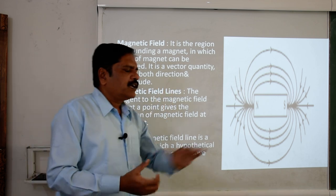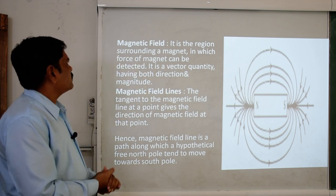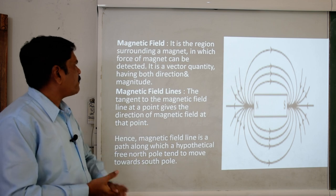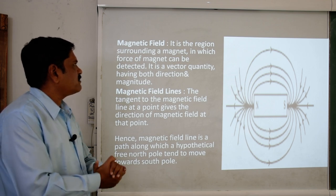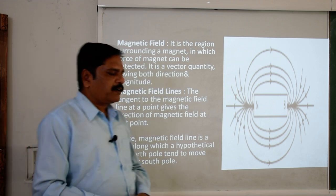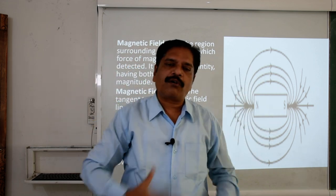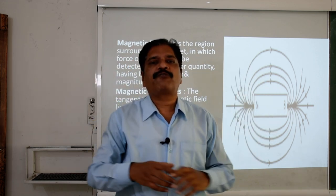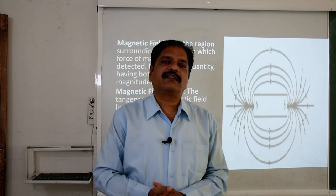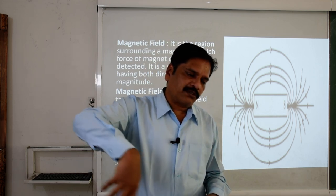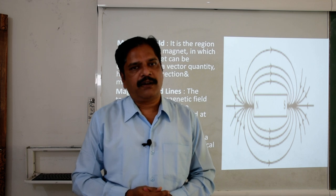Now we are going to discuss the magnetic field. What is the magnetic field? It is the region surrounding a magnet in which the force of the magnet can be detected. It is a vector quantity having both direction and magnitude. Whenever you place a magnet in an open area, it influences magnetic substances uniformly in all directions up to a certain distance. The area covered by the magnet because of its magnetic effect is called the magnetic field.